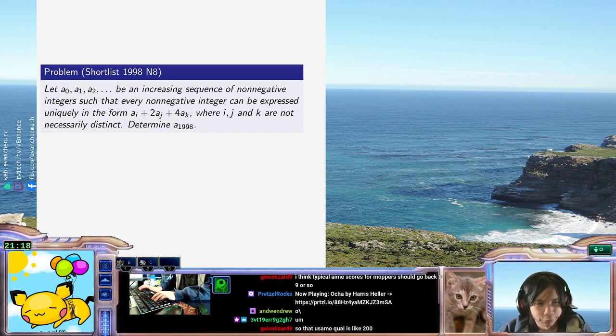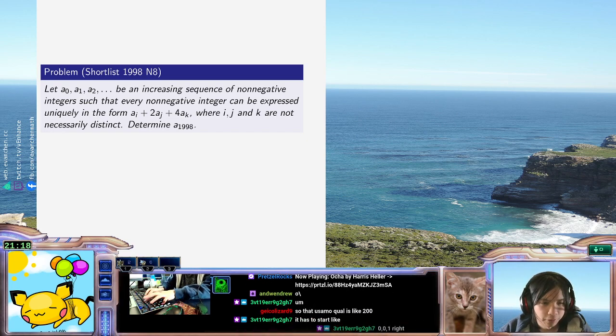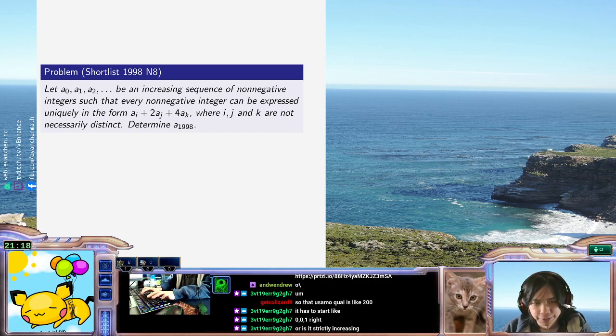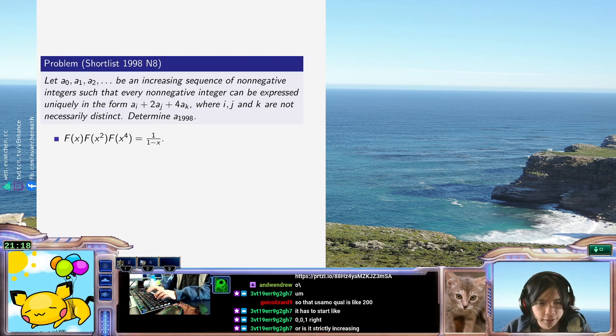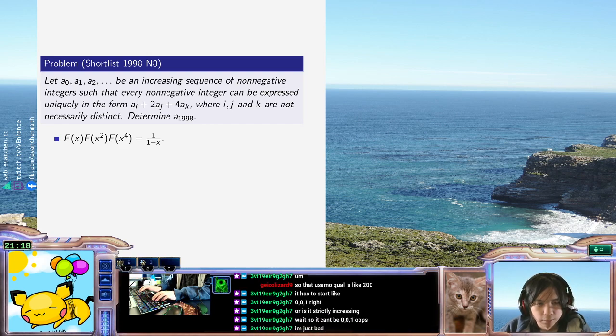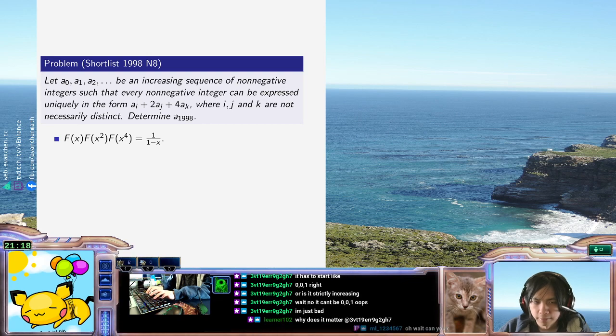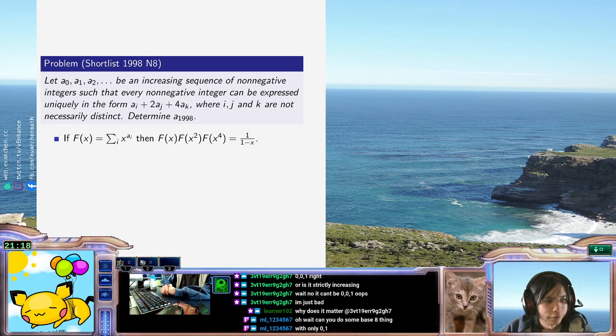First of all, I want to start right away by mentioning the generating function interpretation just because someone already said it. This is true, 1 over 1 minus x as generating functions. If f is like the sum of x to the IA, then that thing is true. So I feel like this will already give us some information.